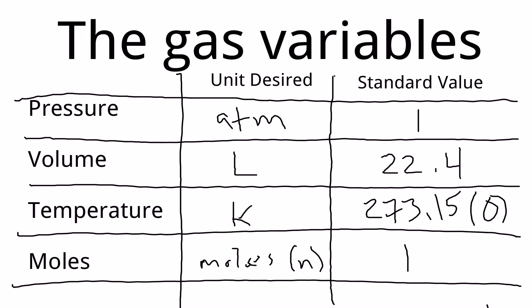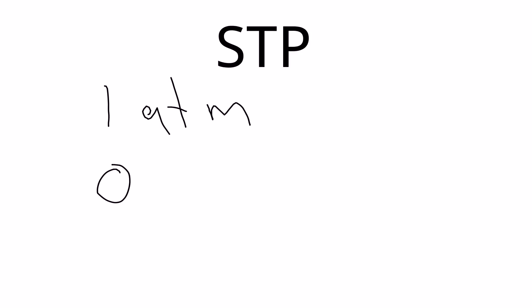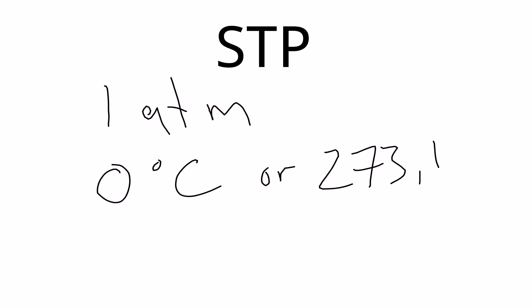So to recap the standard values: one atm, 22.4 liters, 273.15 K or zero degrees Celsius — and we'll try to stick to Kelvin — and one mole, which is the same kind of moles we've used when converting grams to moles. STP stands for standard temperature and pressure, and it simply means one atm and zero degrees Celsius, or 273.15 Kelvin.